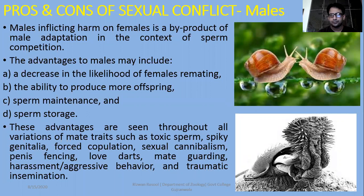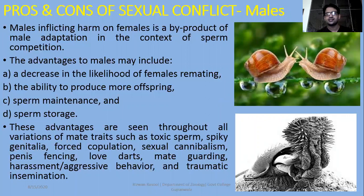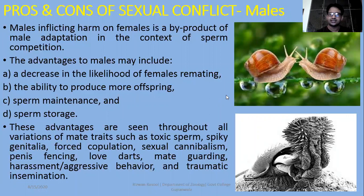Males inflicting harm on females is a byproduct of male adaptation in the context of sperm competition. During mating and reproduction, males inflict harm on females so that females could not mate with other males, and only that male's sperm will produce the next offspring. Advantages to males may include a decrease in the likelihood of females remating, ability to produce more offspring, and sperm maintenance as well as sperm storage in the females. There are many strategies in the animal kingdom which males have adapted by inflicting harm to females so that they may get more benefits.